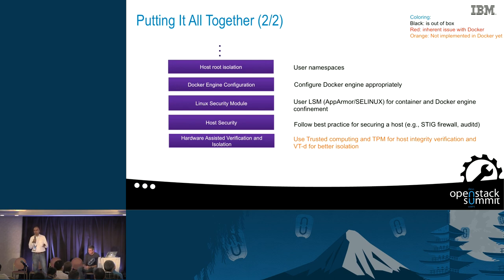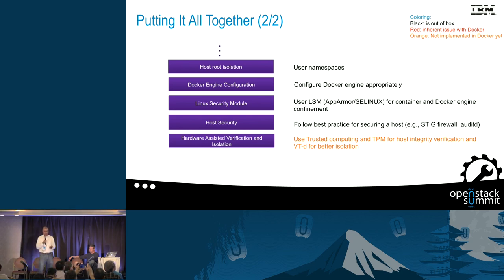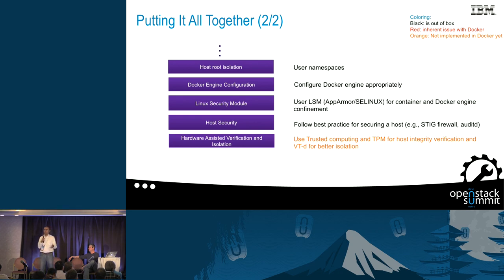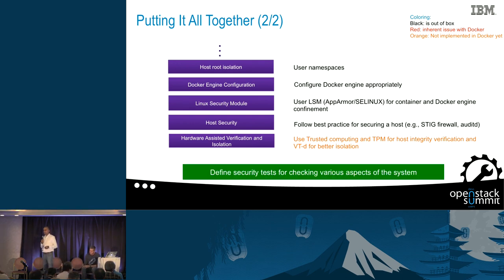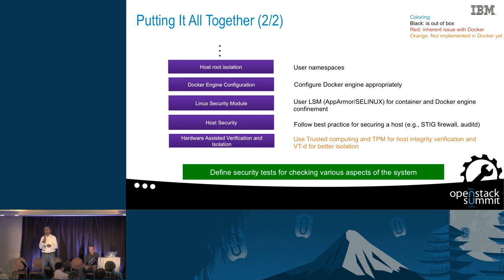Ensure the Docker engine is appropriately configured, appropriate Linux security modules are defined, and you follow host best practices for securing the host. You can also consider hardware-assisted verification and isolation — there is great work in the community using TPM for verifying the host, images, and containers, with talks from Intel colleagues about that. Most importantly, define appropriate security tests and run them within your cloud environment before putting things into production, to ensure all those limits and configurations are indeed being followed.